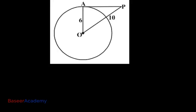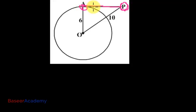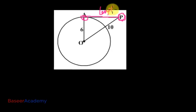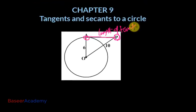Now let us find out the length of a tangent. In this picture, AP is a tangent. P is an external point, and from P we have drawn a tangent PA. The distance from the external point to the point of contact is known as the length of the tangent — so the distance from point P to point A, where A is our point of contact, is the length of the tangent.